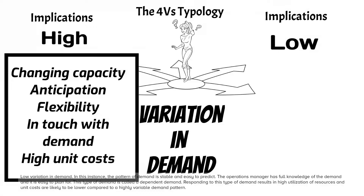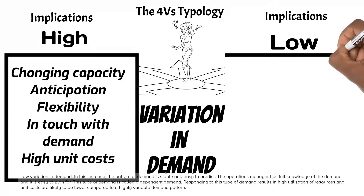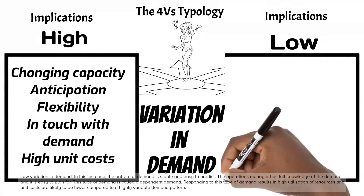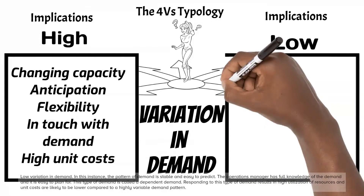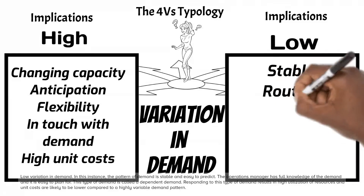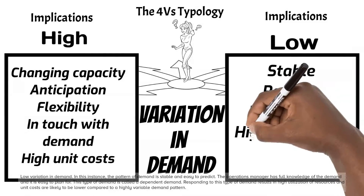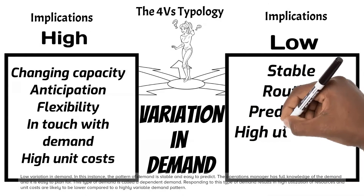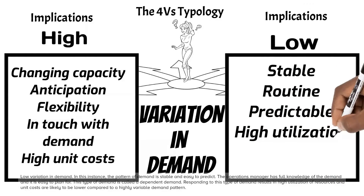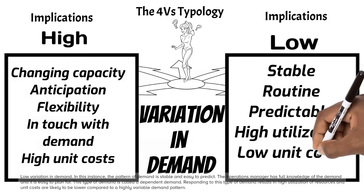Low variation in demand: in this instance, the pattern of demand is stable and easy to predict. The operations manager has full knowledge of the demand and it is easy to plan for. This type of demand is called a dependent demand. Responding to this type of demand results in high utilization of resources, and unit costs are likely to be lower compared to a highly variable demand pattern.